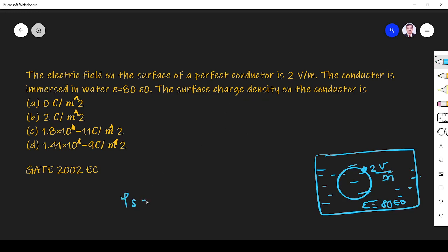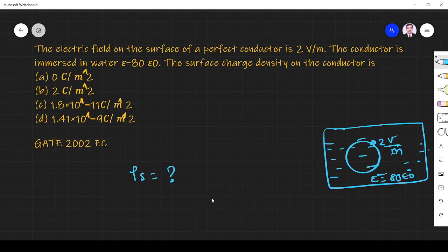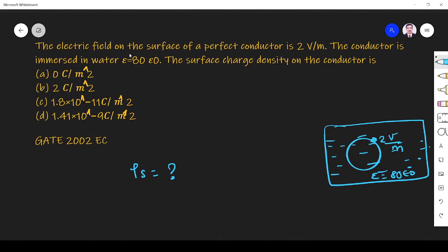We have to find what is rho s. This is what we know. They have given the electric field on the surface of the perfect conductor.